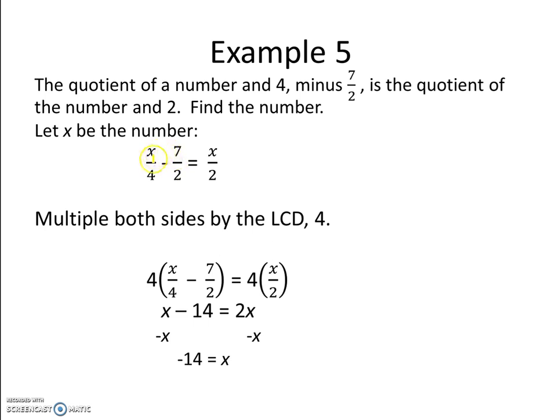So we have x divided by 4 minus 7 halves equals x divided by 2. In order to simplify, we multiply both sides by the least common denominator. The least common denominator of 4, 2, and 2 is 4.